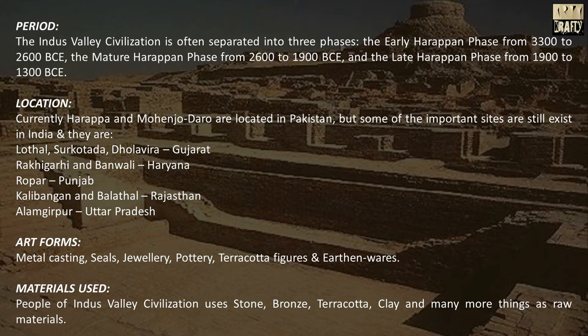Other Indian sites include Ropar in Punjab, Kalibangan and Balathal in Rajasthan, and Alamgirpur in Uttar Pradesh. Art forms include metal casting, seals, jewelry, pottery, terracotta figures, and earthenwares. Materials used are stone, bronze, clay, and many more things as raw materials.